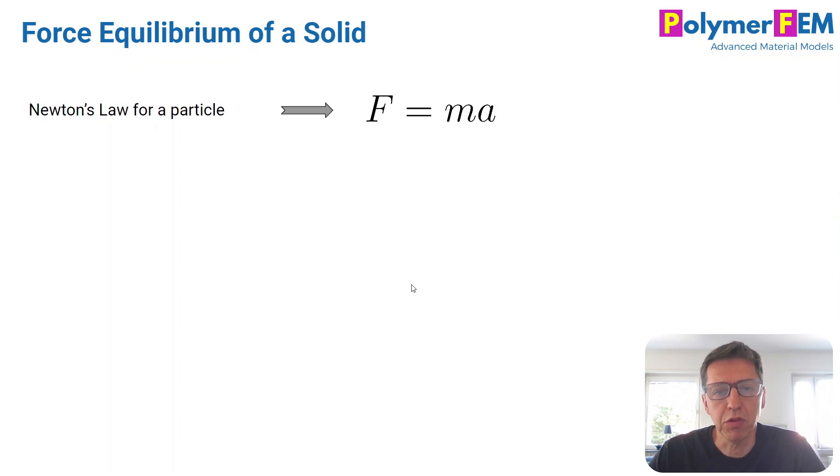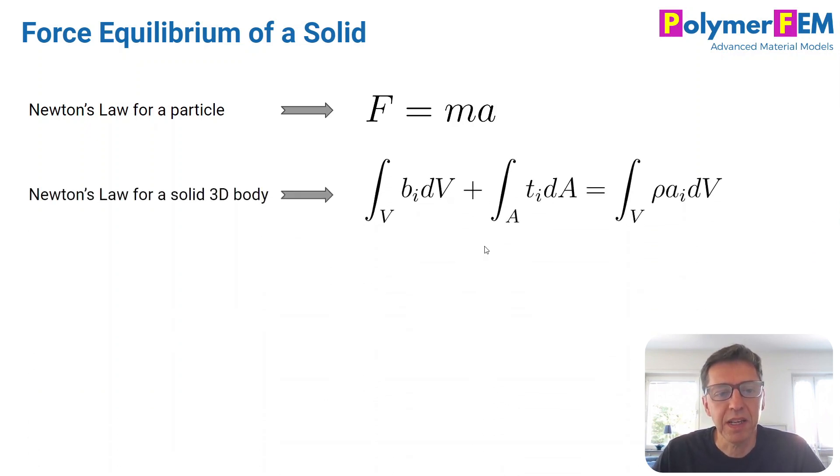The force equilibrium starts with Newton's law, F equals ma—a lot of things comes back to Newton. If you write Newton's equation for a solid body that can be deformed, it can be written in this way. We have bi as a body force in a certain direction; we take the integral of the body force over the volume. Lowercase ti is a surface traction, so it's a force on the surface, and we sum that over the area using an integral. On the right side we have mass times acceleration.